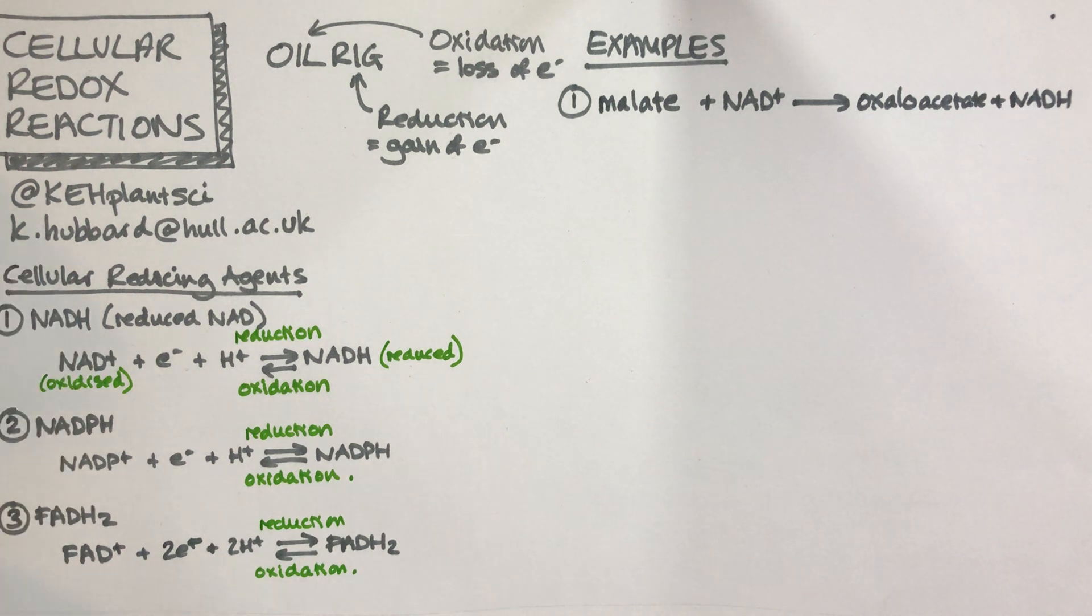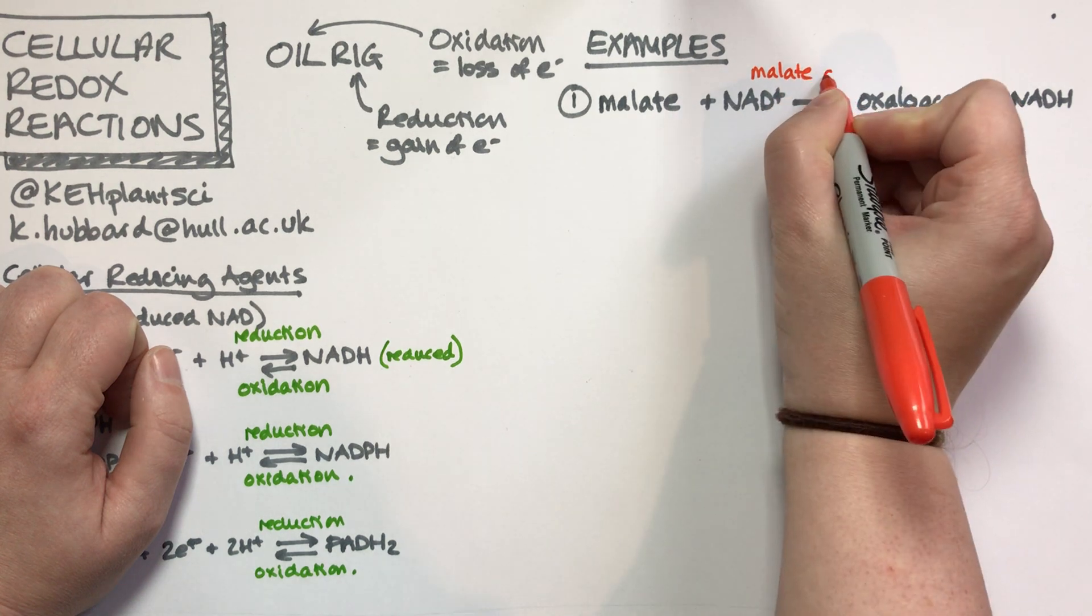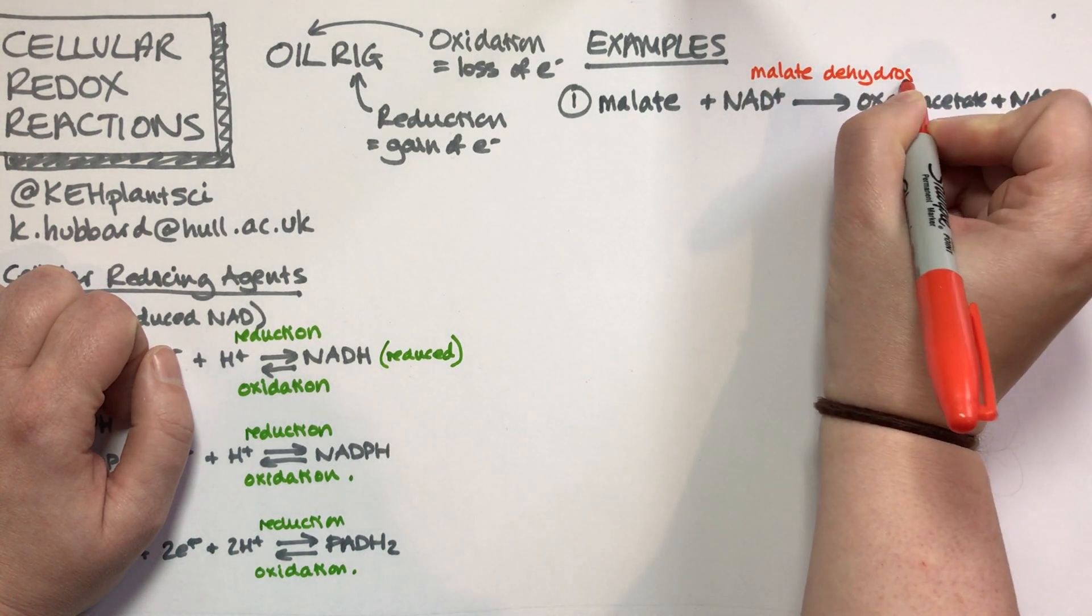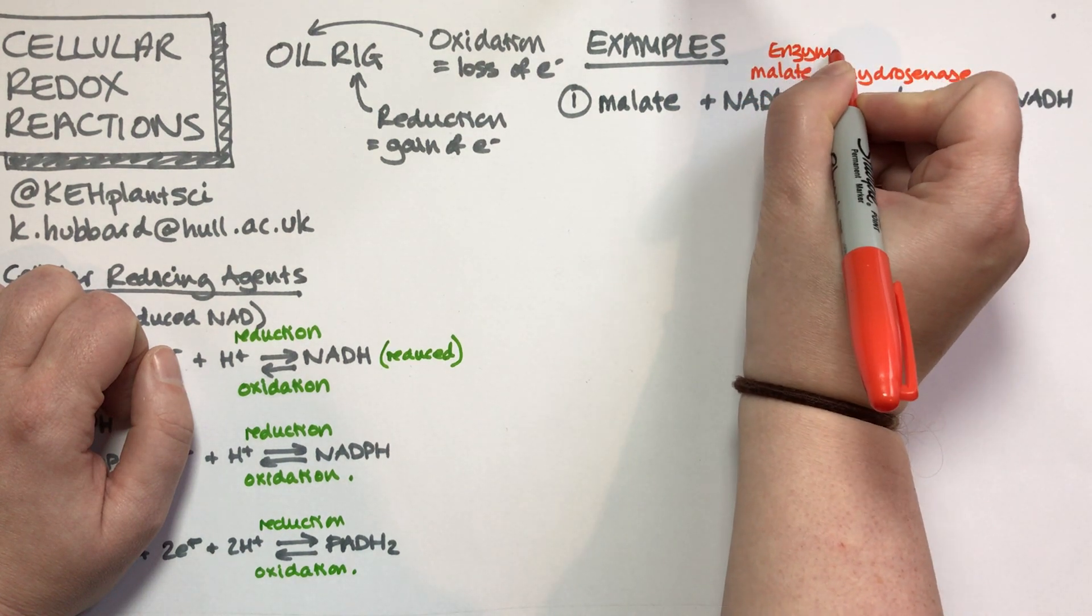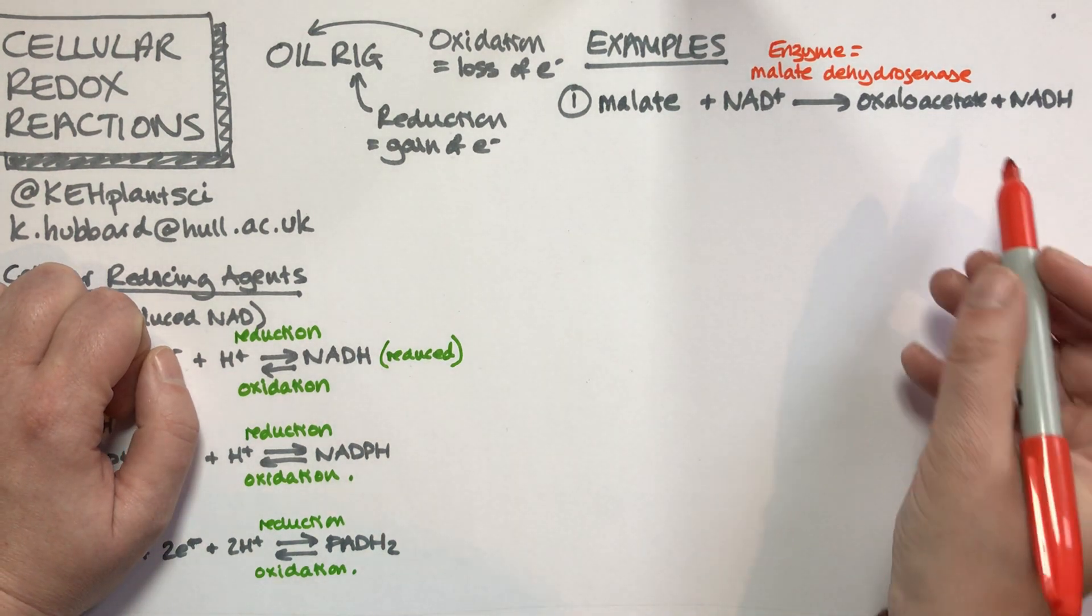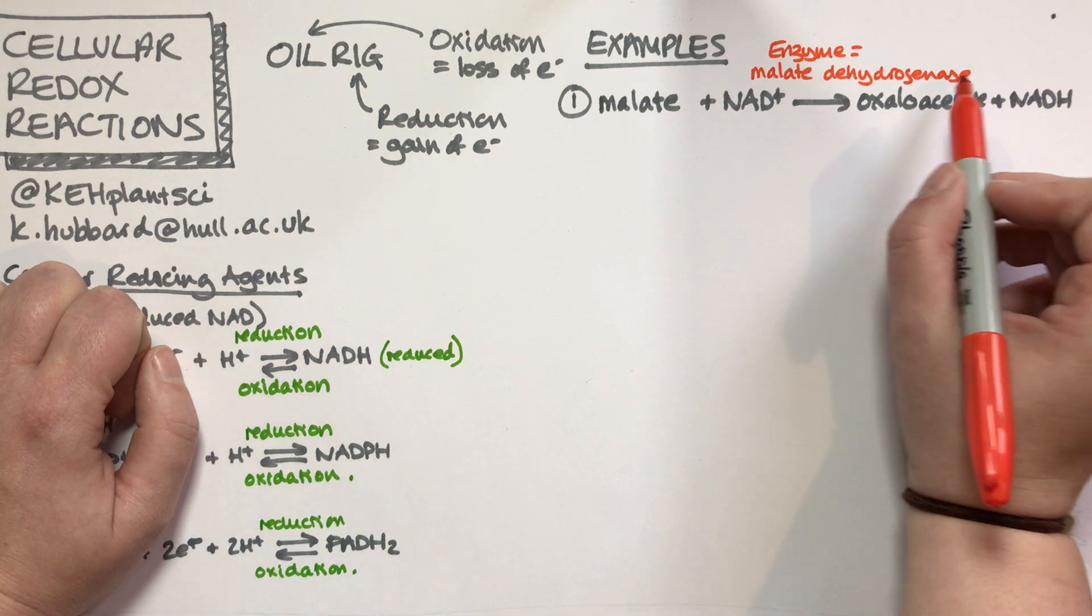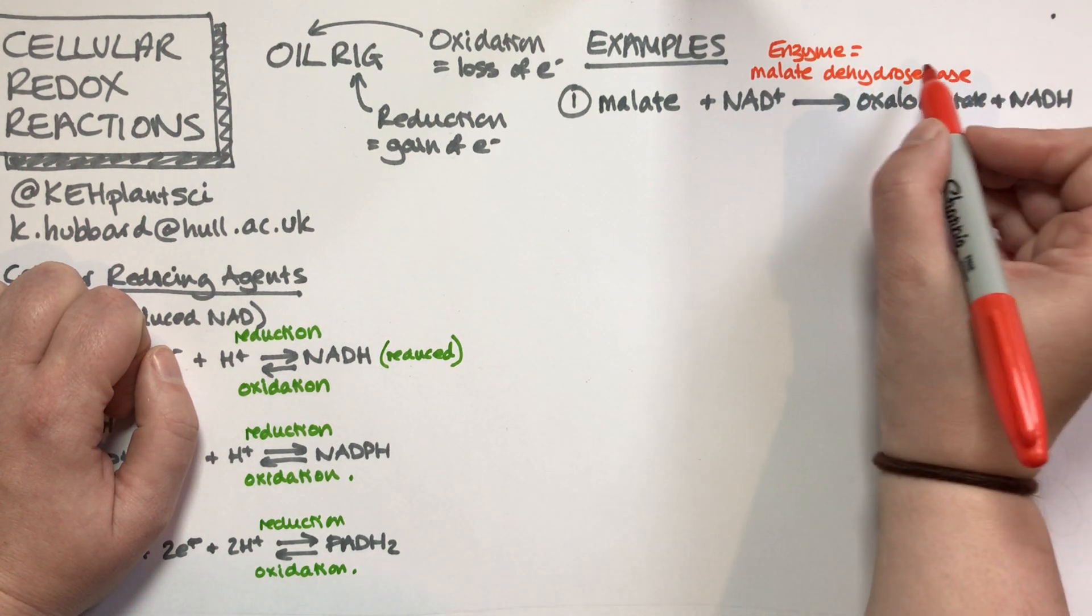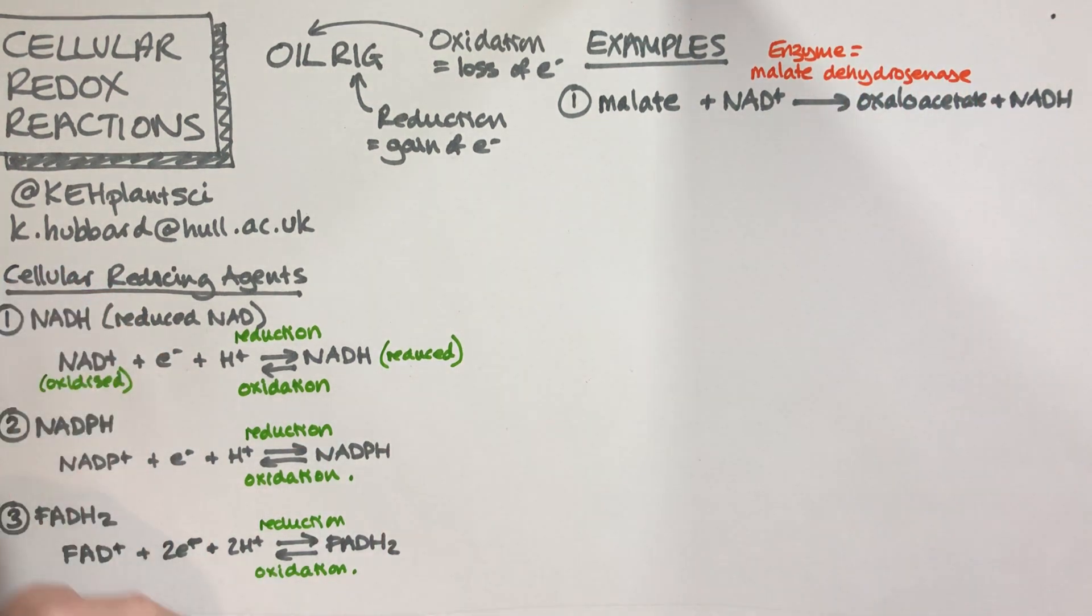In this case, the reaction is happening in one direction and is catalyzed by an enzyme called malate dehydrogenase. As a hint, if you see the word dehydrogenase in the name of an enzyme, that almost certainly means it's a redox reaction. Dehydrogenases are generally catalyzing redox reactions.